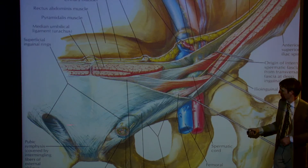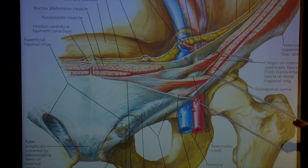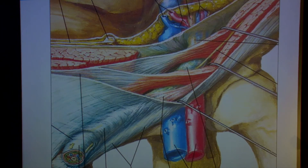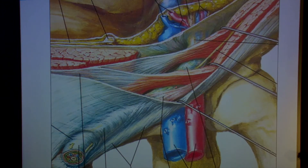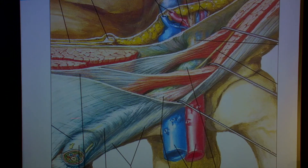In the external oblique aponeurosis there's a triangular opening where the spermatic cord exits — this is the superficial inguinal ring. Zooming in on the inguinal canal: it starts here at the transversalis fascia, where nerves, arteries, veins, and the sperm ducts enter, picking up coverings from each layer as they pass through the abdominal wall. They exit here as the spermatic cord down into the testicle. This entrance through the transversalis fascia is the deep inguinal ring. So we've got the deep ring, the structures pass through the various layers, and exit at the superficial ring as the spermatic cord — this is the inguinal canal.